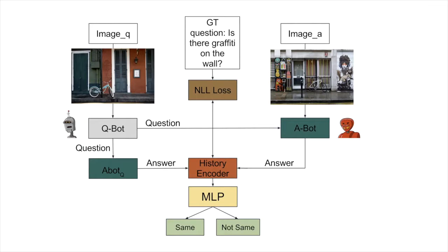We use the VQA 2.0 dataset which has pairs of images, each with a differentiating question. Randomly, similar or dissimilar images are passed to the Qbot and Abot. The Qbot trains to regress to the differentiating question. The dialogue history between the bots is then used to classify the images as being same or not.